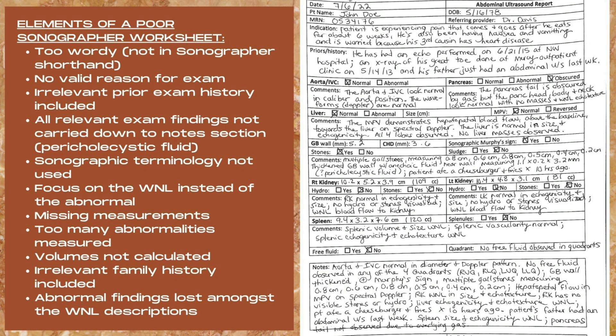Now let's get into the exam findings. For the aorta and IVC, it's marked normal in the checkbox, but then it also says: 'the aorta and IVC look normal in caliber and position, the waveforms Doppler are normal.' All of this information is already conveyed within that normal checkbox — writing it out makes the sheet extremely busy. For the pancreas, the only information that needs to get conveyed is that the pancreas tail is obscured by gas. Everything else is extra information assumed when no abnormal findings are reported.